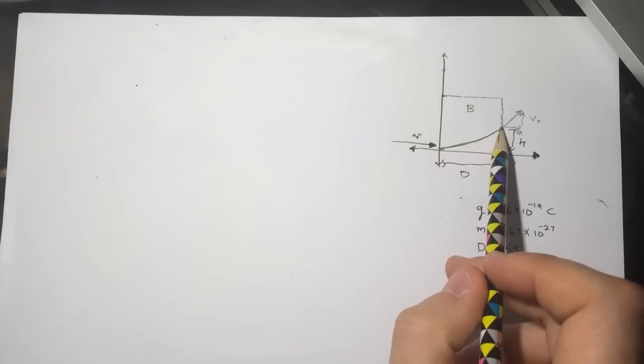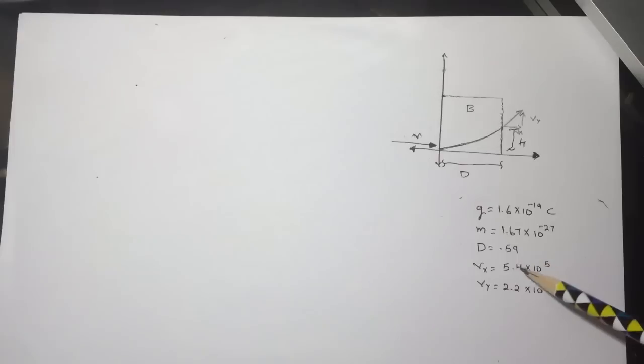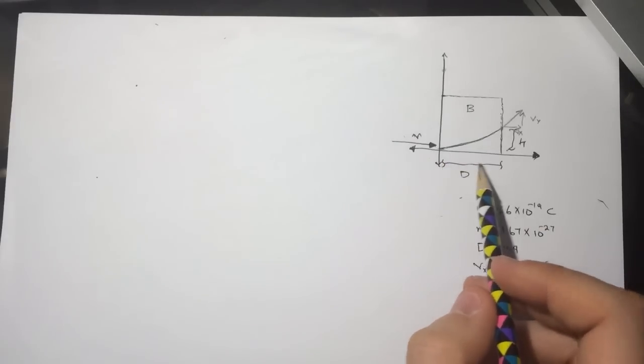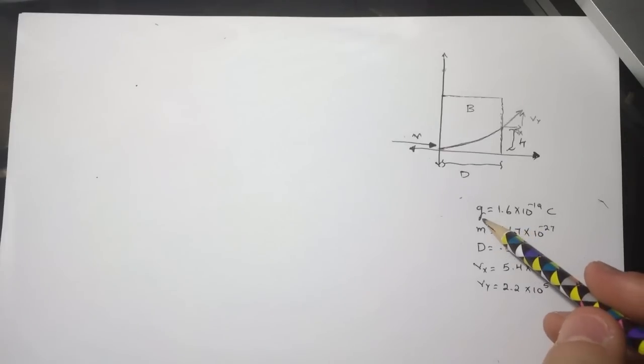And it went out from here with the velocity. They gave us Vy and Vx, they gave us d which is the distance for the magnetic field, and they gave us the mass and the charge of the proton which is positive.